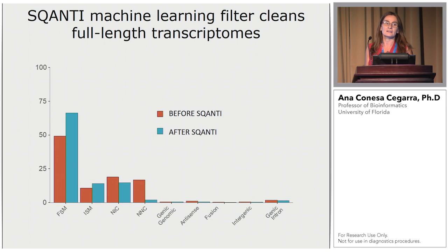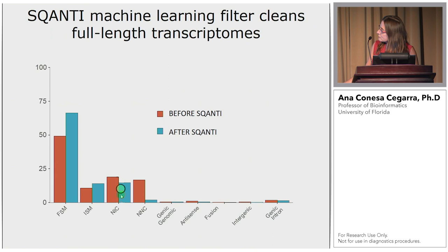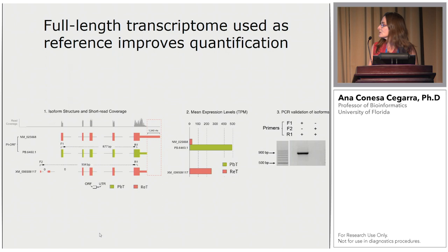With this information, we developed a machine learning filter — I won't explain the details here — but basically we are able to remove some of the transcripts in the different categories. The major effect is that we increase the percentage of full splice matches, which are the bona fide transcripts. Novel not in catalog transcripts are largely removed, though not completely, but we do find quite a number of novel in catalog transcripts — novel combinations of junctions even in a transcriptome like the mouse transcriptome.